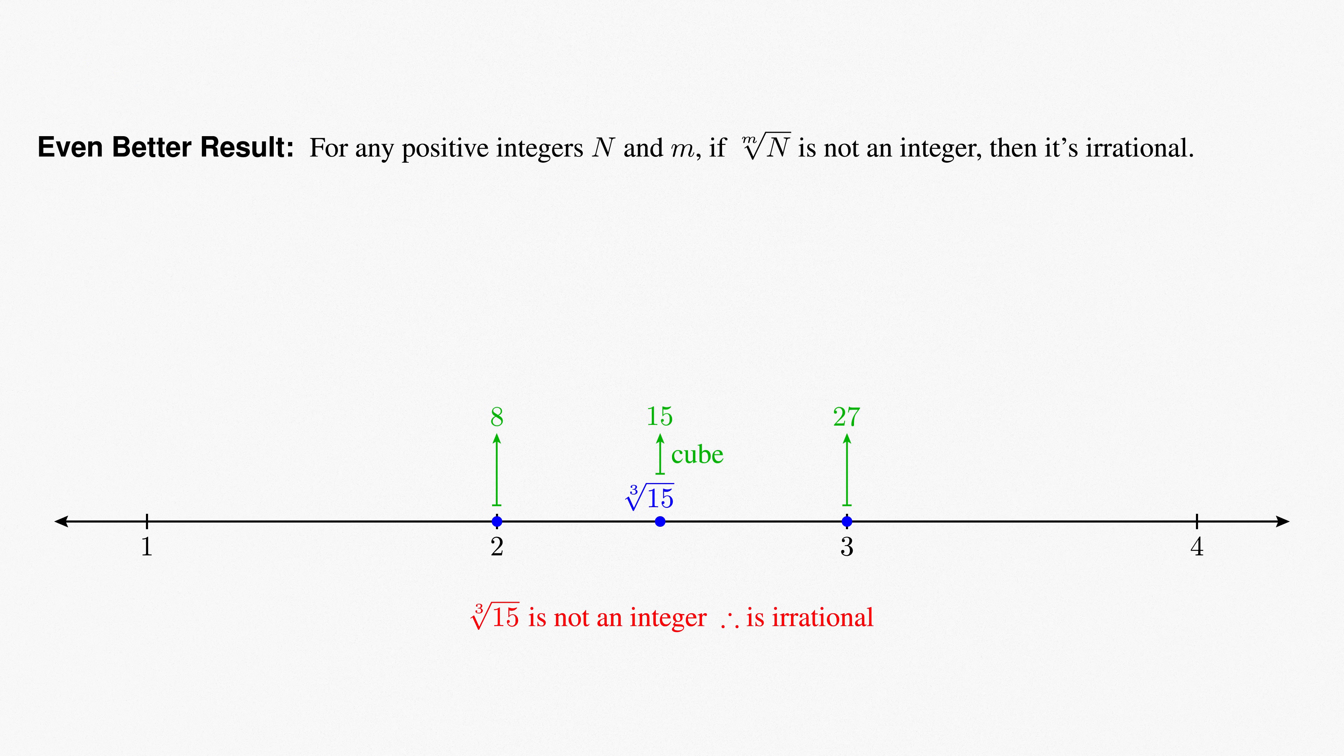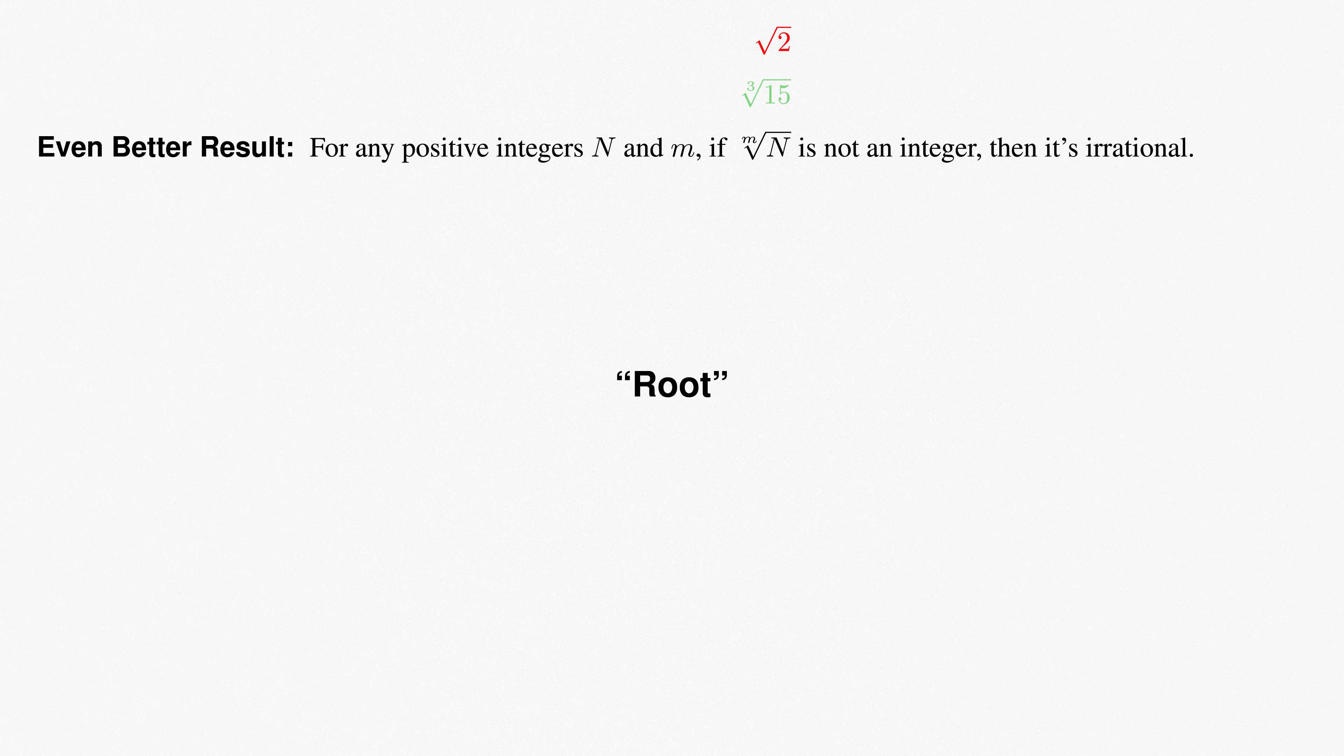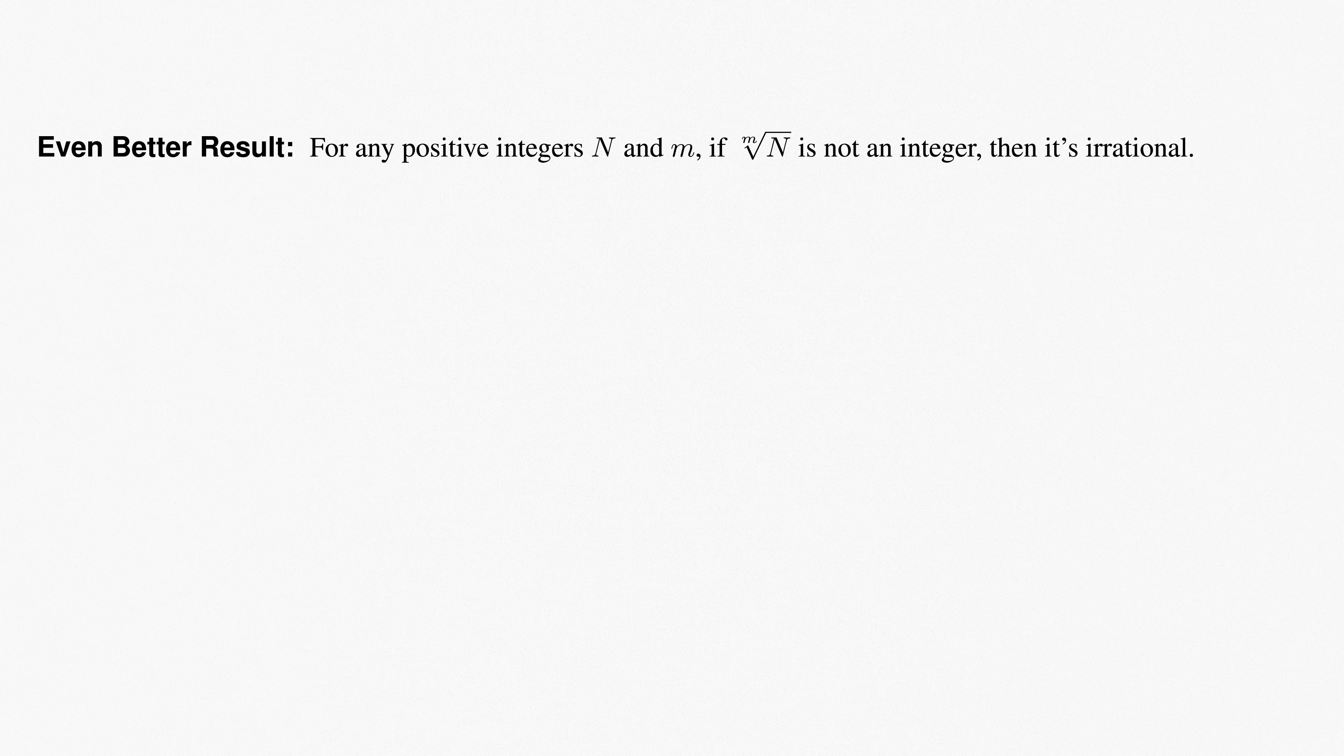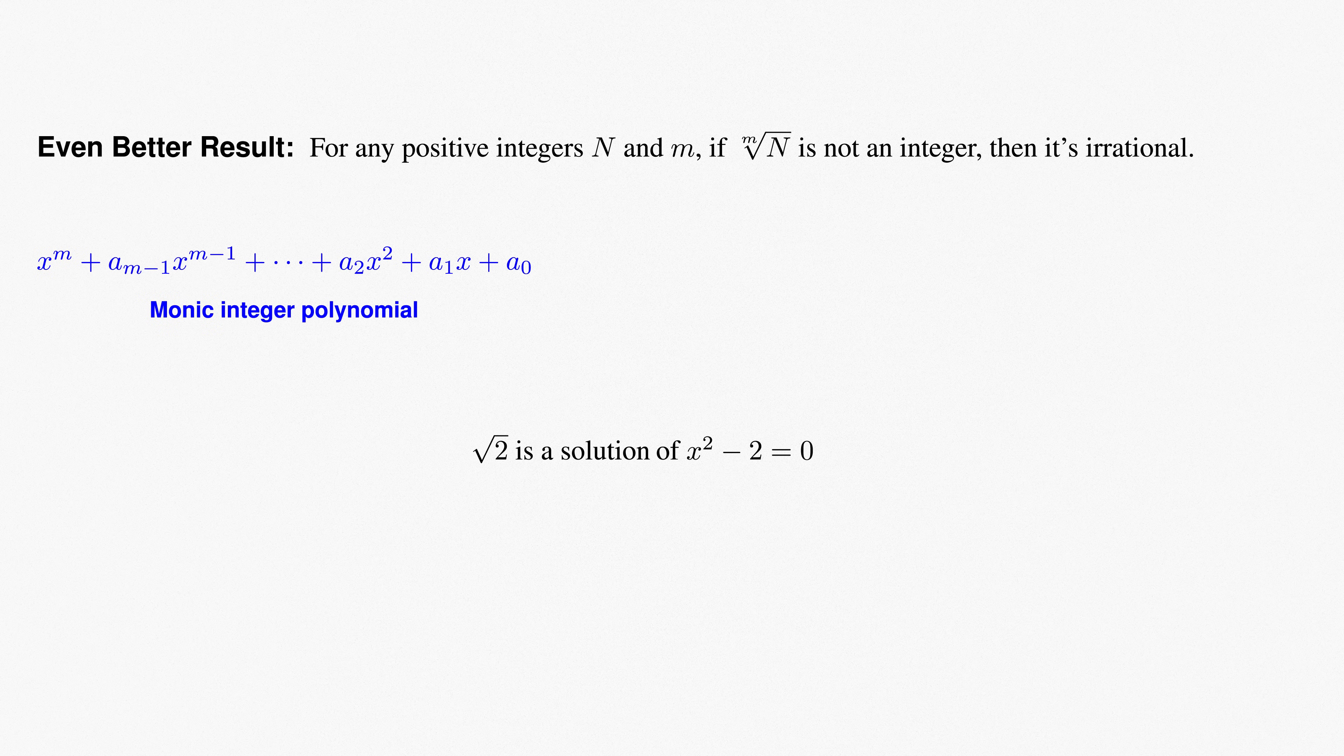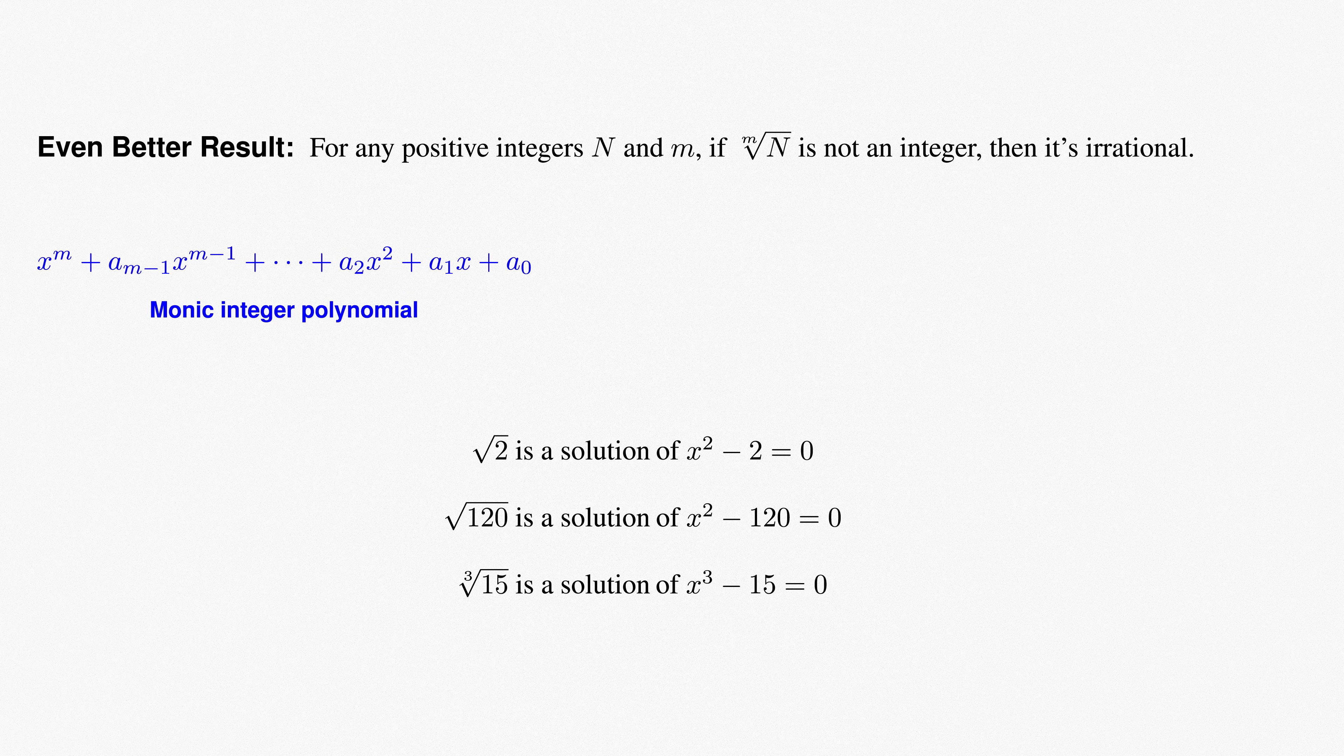The word root, as in square root, cube root, and mth root, is actually a clue that this result generalizes even further. What allowed us to use this argument is that each of our numbers was a root of what's called a monic integer polynomial. That is, a polynomial with integer coefficients, for which the leading coefficient, though on the largest power, is 1. Root 2 is a solution of x squared minus 2 equals 0. Root 120 is a solution of x squared minus 120 equals 0. Cube root of 15 is a solution of x cubed minus 15 equals 0, etc.